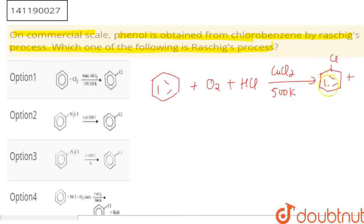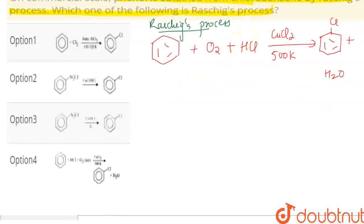Water is formed. Then, chlorobenzene is formed, and then phenol is formed from chlorobenzene. So this is the Raschig's process. This is the starting agent, and these are the reagents used. So, this is option 4. This is your answer. Thank you.